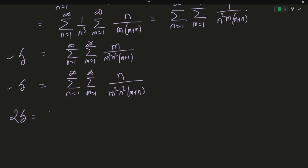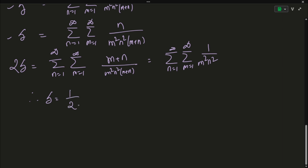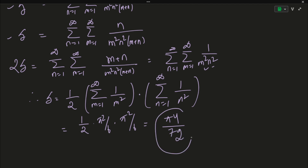Adding the two expressions for S, we get 2S equals the double summation of (m+n)/(m²·n²·(m+n)), which simplifies to the double summation of 1/(m²·n²). Since these are independent summations, they can be evaluated separately and written as a product: 2S = (Σ 1/n²) × (Σ 1/m²) = (π²/6) × (π²/6) = π⁴/36. Therefore S = π⁴/72.